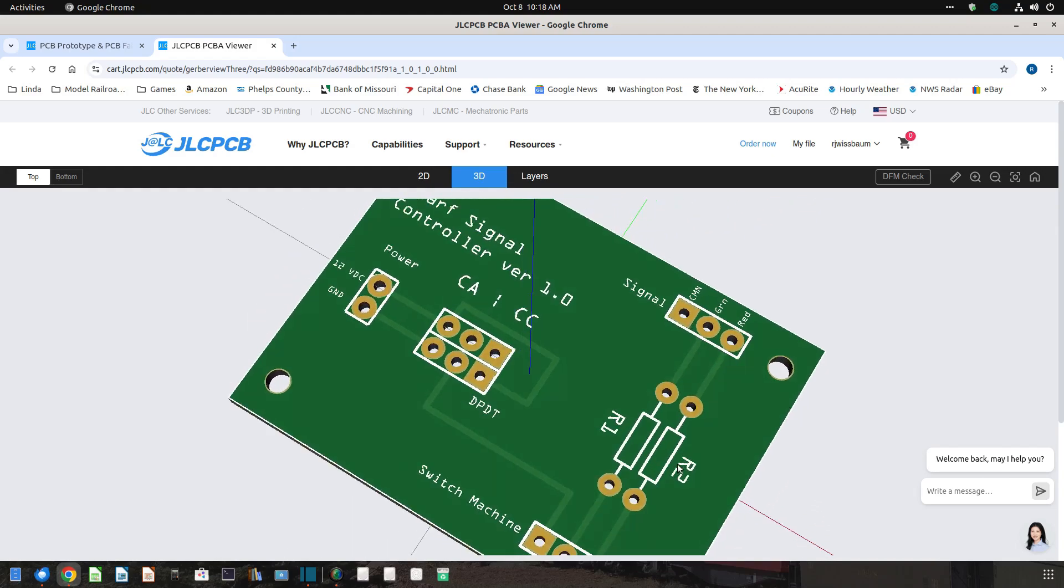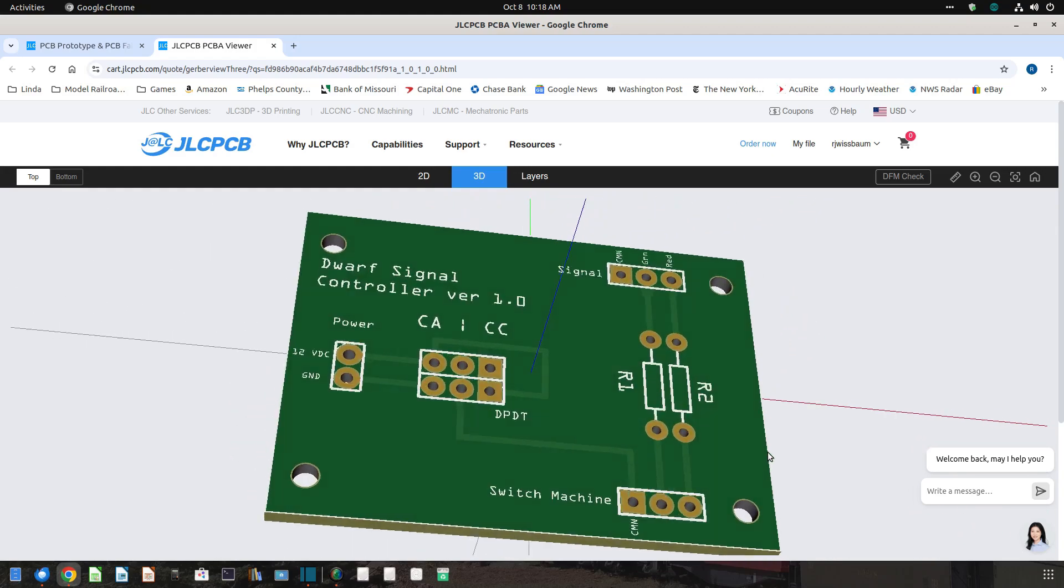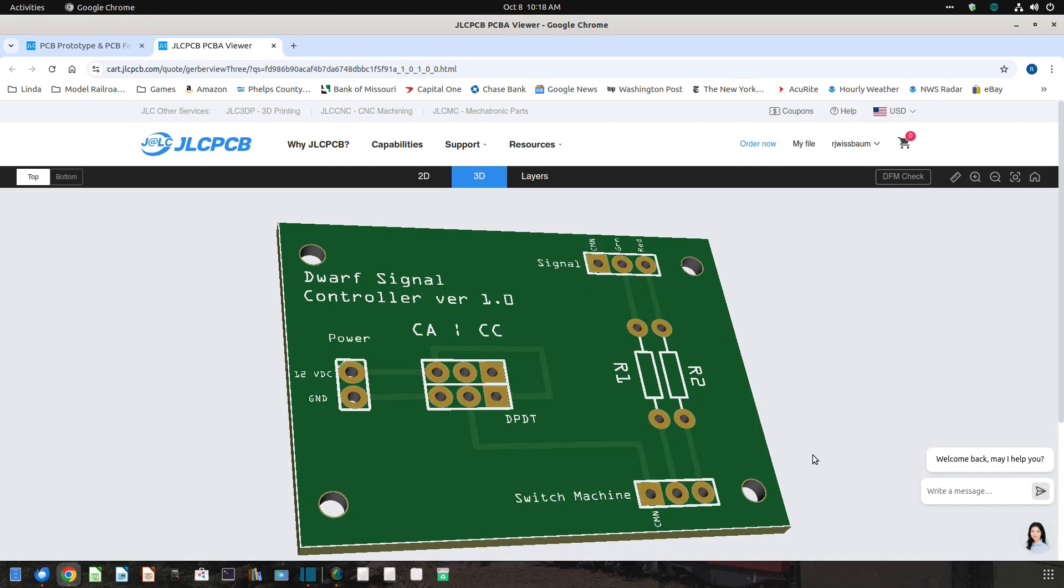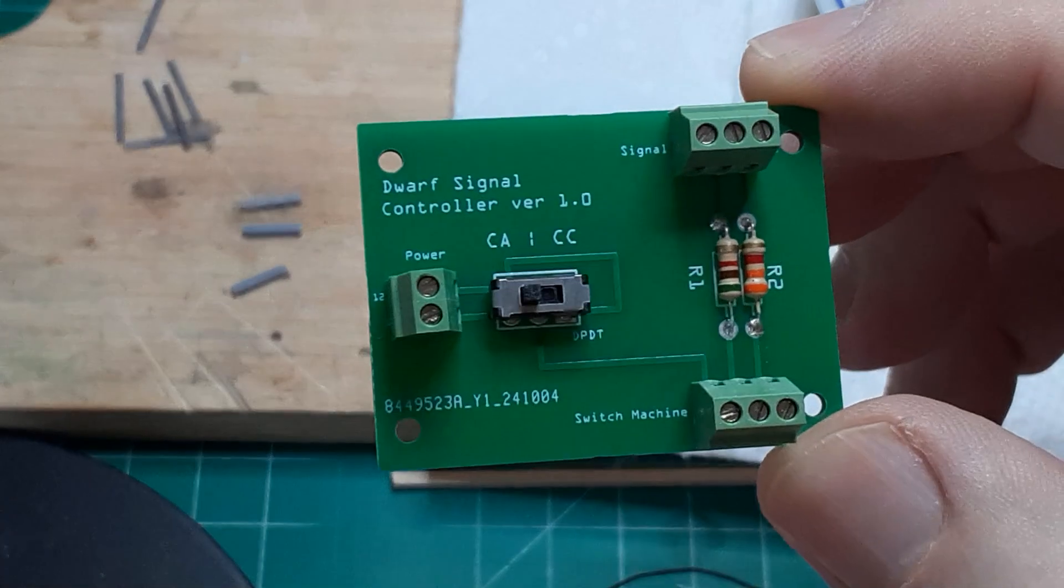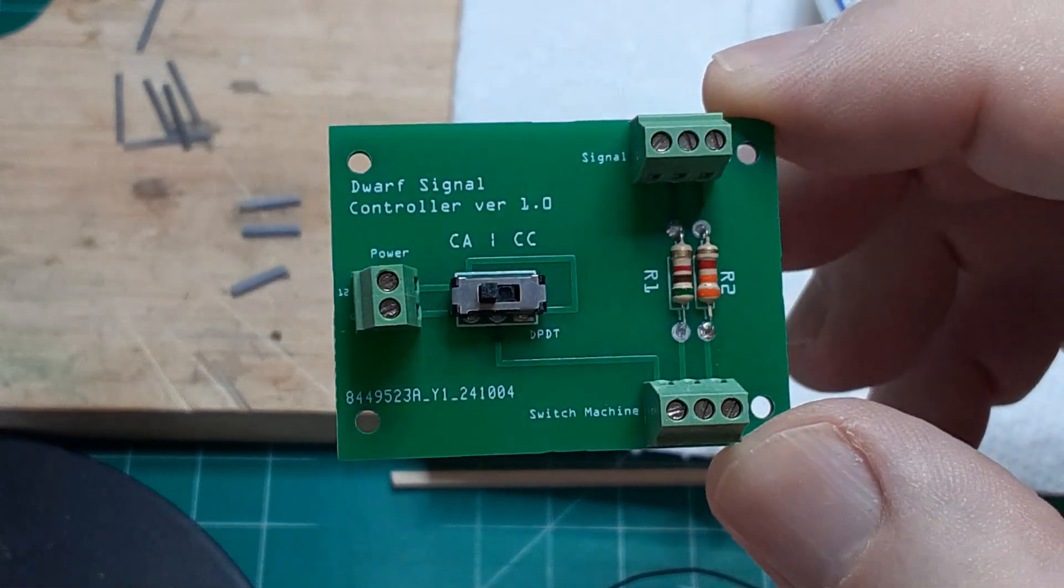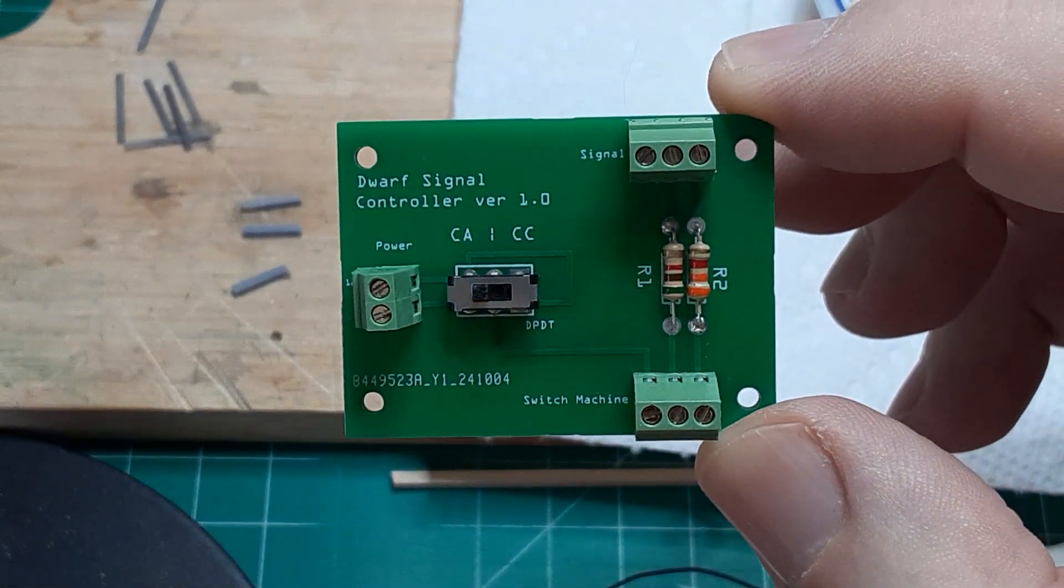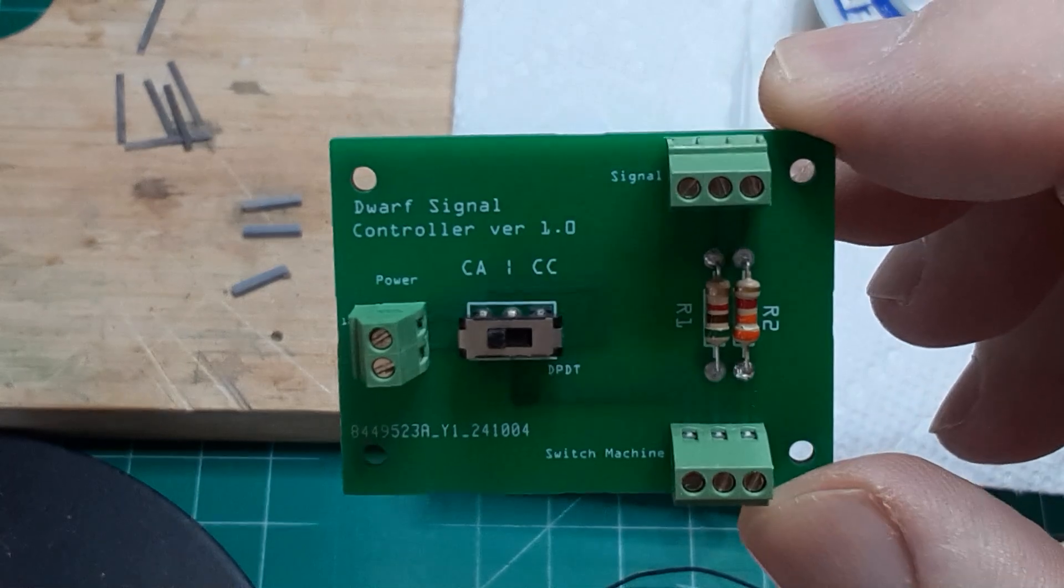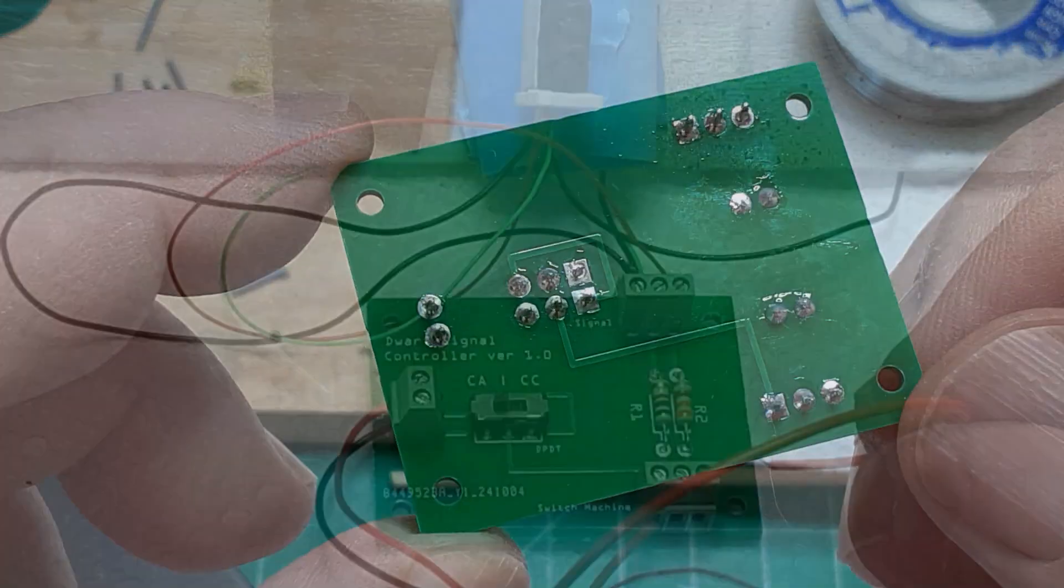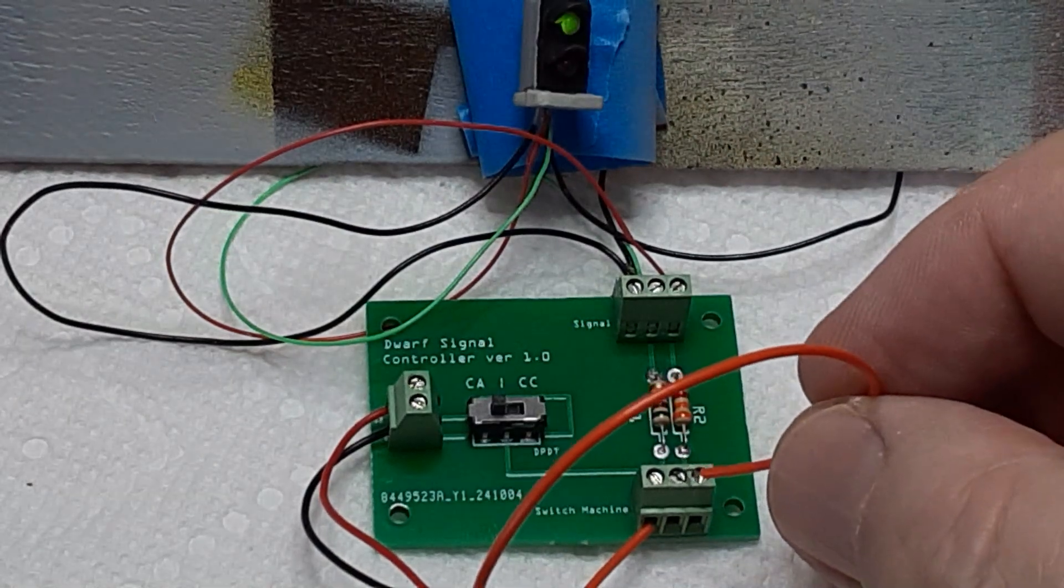I used JLCPCB. They will print 5 boards for $2 or 15 boards for $4. Standard shipping is $18 for 2-4 day delivery, but you can select a slower delivery service for under $2. Once you have the custom board, simply solder the components: the three screw terminals, the DPDT switch, and the resistors to the board. Hook up the signal device and power and connect it to your switch machine.